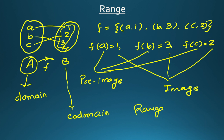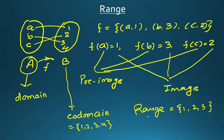Range is the collection of all those elements of the codomain which are related with the domain. In the codomain, not all elements are necessarily related. Here you can see that 4 has no relation with any element. So the codomain is {1, 2, 3, 4} but the range will be only {1, 2, 3}. Range is the subset of codomain.